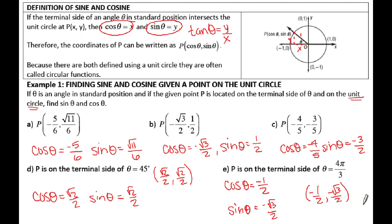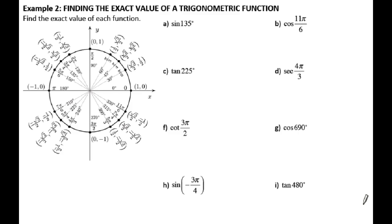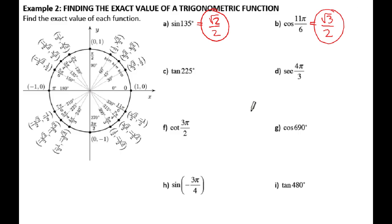For the next example, we're going to look at all trig functions, not just cosine and sine. Sine matches up with your y-coordinate, so sine of 135 degrees — going to 135° on the unit circle — the y-coordinate is √2/2, so sine of 135 is √2/2. Cosine matches up with your x, so cosine of 11π/6 is √3/2. Tangent is y over x, so tangent of 225: y-coordinate is -√2/2 divided by x-coordinate -√2/2, and that equals positive 1.